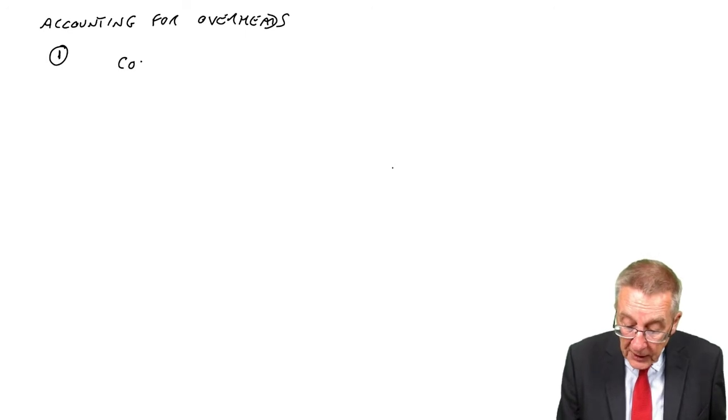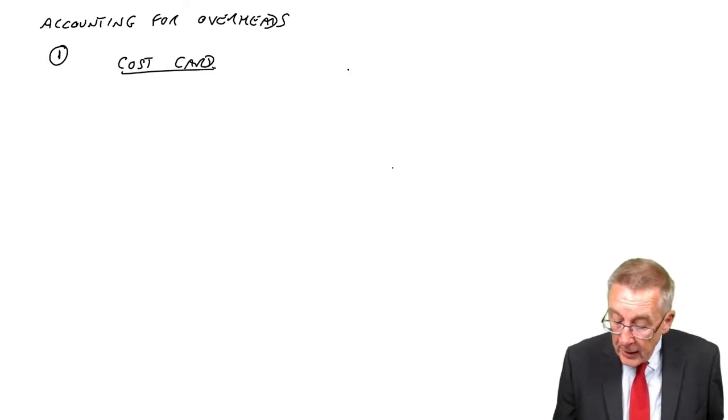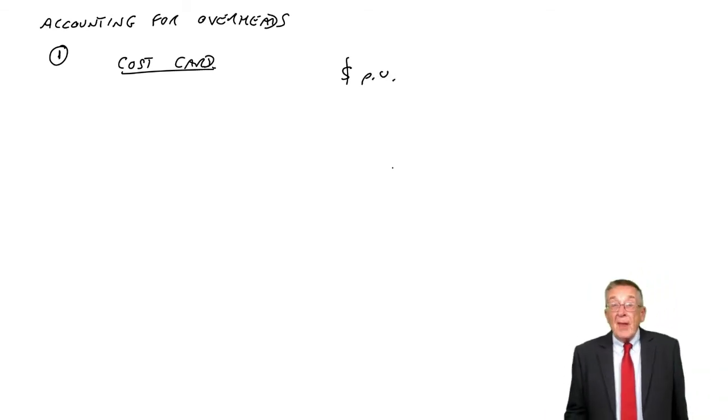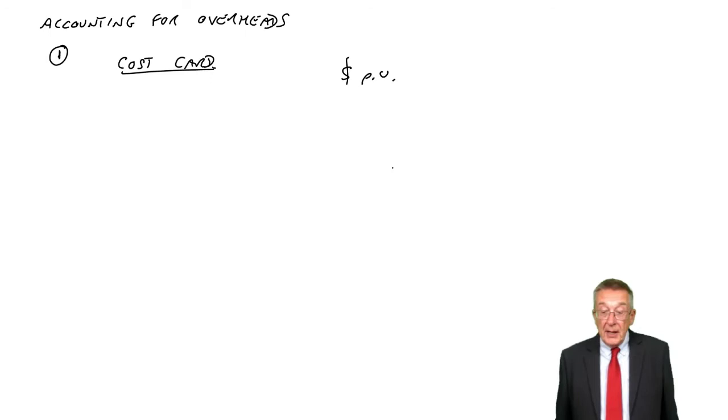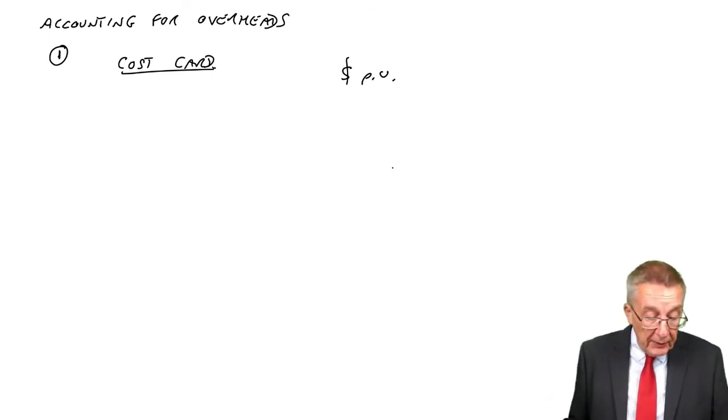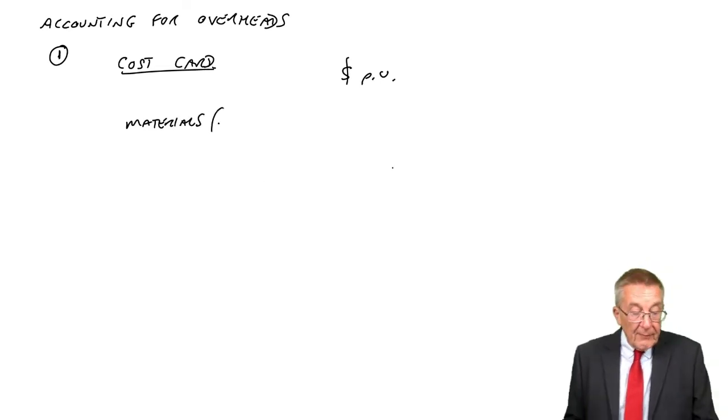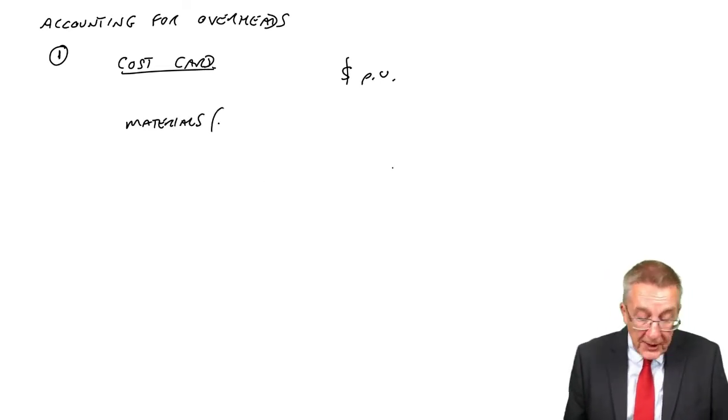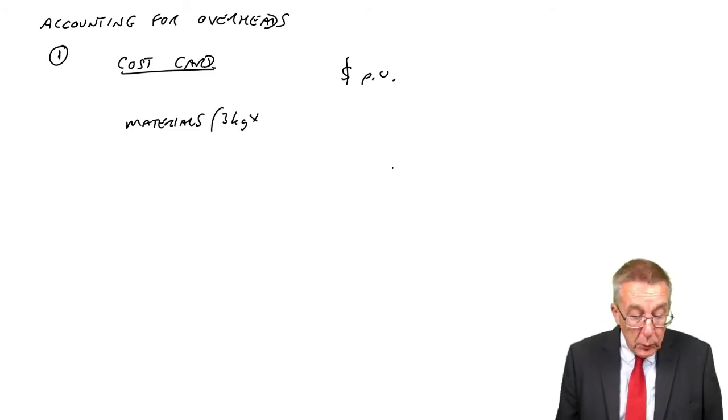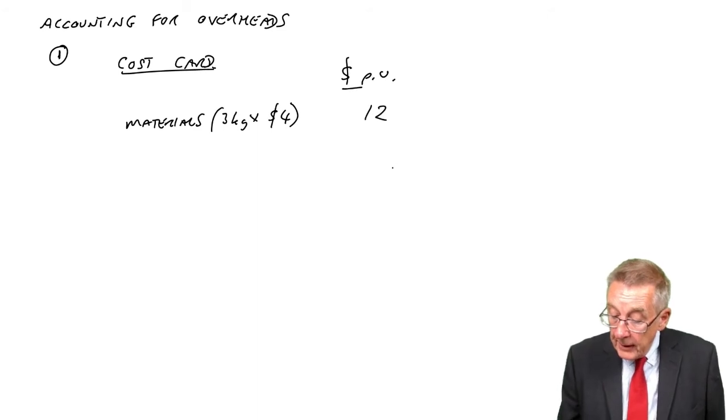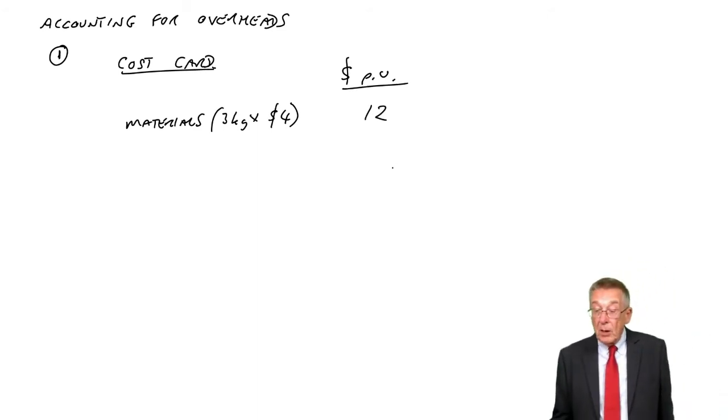For this, we produce a cost card. We want the cost per unit, and we list the costs involved and add them up. We've got wood, our materials. It says each unit uses three kilos of wood, and the wood costs four dollars a kilo. And so, twelve dollars a unit.